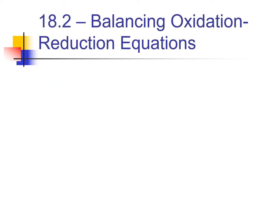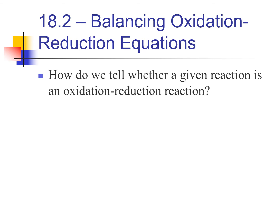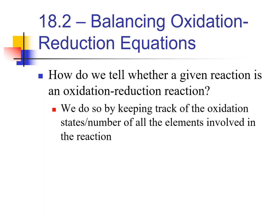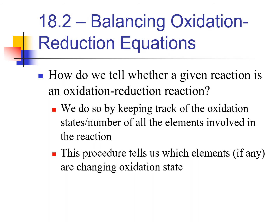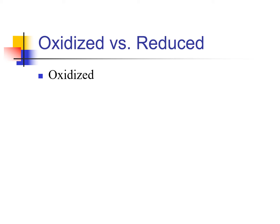Now that we have an idea of how to find oxidation numbers, let's use them. Section 18.2 is about balancing redox reactions — you won't have to balance them on the AP test, but we need some of the skills. To know if a reaction is a redox reaction, if any atom has a change in its oxidation number from reactants to products, it's a redox reaction. If any oxidation numbers change, it will be a redox reaction.